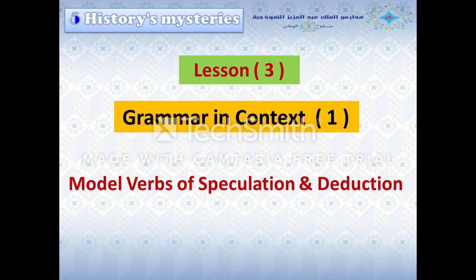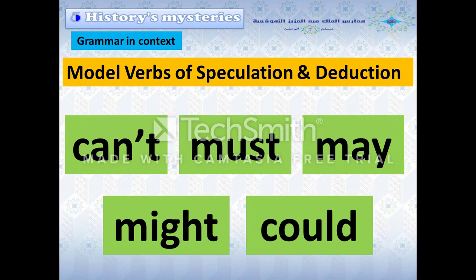Lesson 3 is a grammar in context. It's about modal verbs of speculation and deduction. The modal verbs of speculation and deduction are: can't, must, may, might, and could.